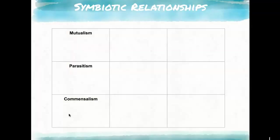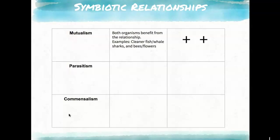Symbiotic relationships — which you learned in grade 9 — come in three types. Mutualism is when both organisms benefit. Examples include cleaner fish and whale sharks, where the fish clean the shark's teeth preventing infections while getting food themselves. Bees and flowers are another example: bees get material for honey while flowers get pollinated to pass on their DNA.